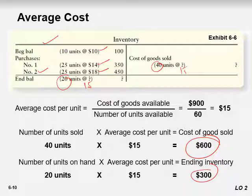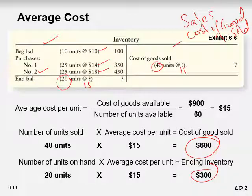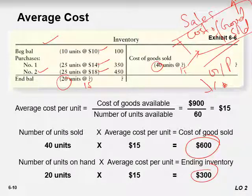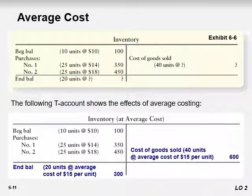Profit depends on the inventory method we choose. The income statement starts with sales and then cost of goods sold. If cost of goods sold is higher, gross profit will be lower; if cost of goods sold is lower, gross profit will be higher. That's why the method chosen for recording inventory affects profit. In the T-account for inventory at average cost, the balance is $300 and the expense — cost of goods sold — is $600.